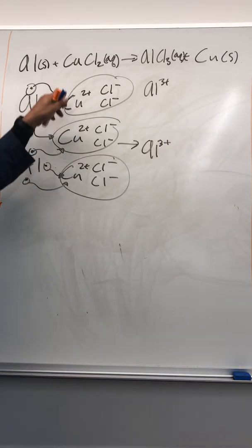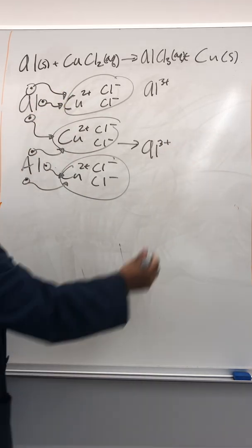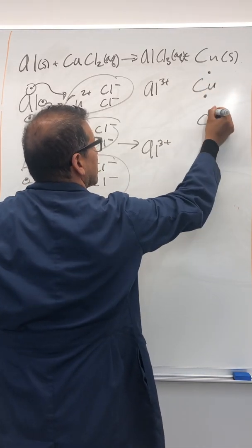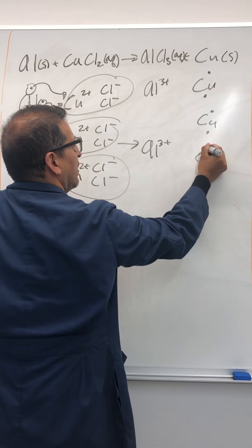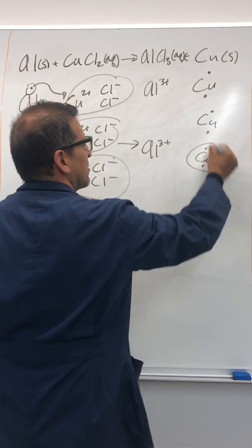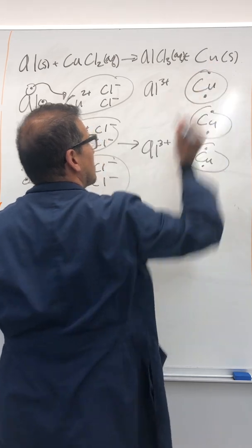And we have when you give these electrons to copper, you end up with this is solid copper, of solid copper atoms. So there's three of them. So let's take a look. Let's put some numbers in front of all this.